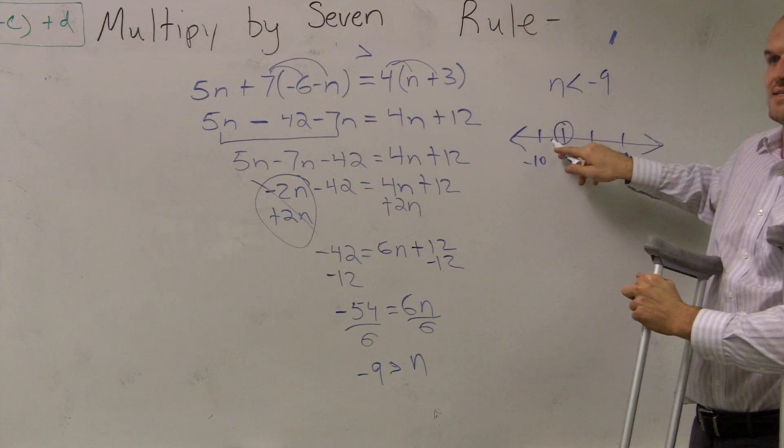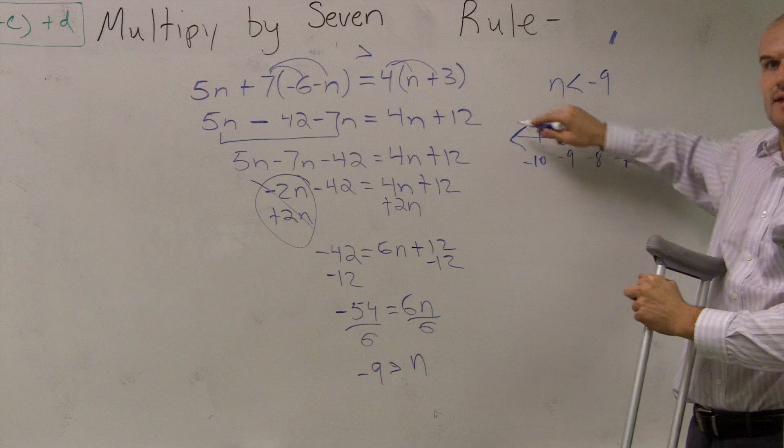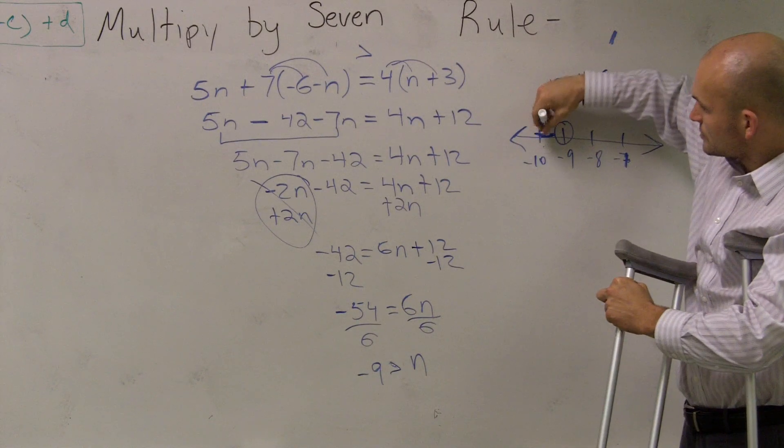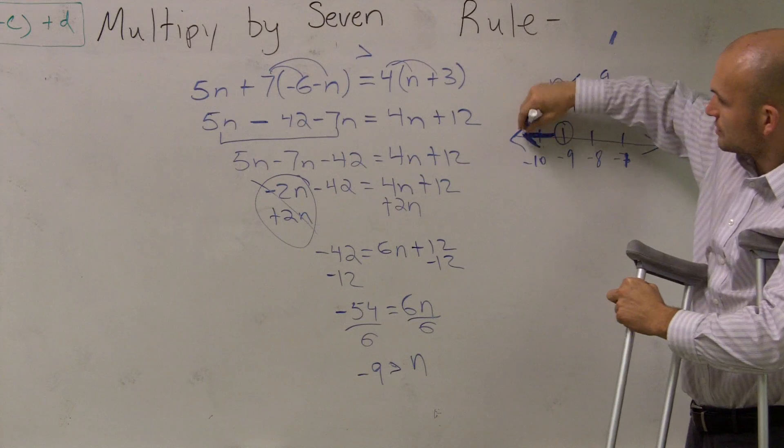And all numbers that are less than negative 9, that would be negative 10, negative 11, negative 12. So all numbers to the left make that true. So since they're true, my graph goes to the left.